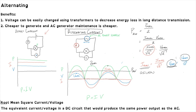A common question asks you to define what a root mean square current or voltage is. The RMS current or voltage is the equivalent current or voltage in a DC circuit that would produce the same power output as the AC circuit. For example, if a DC device has a voltage of 200 volts, the AC circuit would need an RMS voltage of 200 volts to make the light bulb shine equally as brightly.